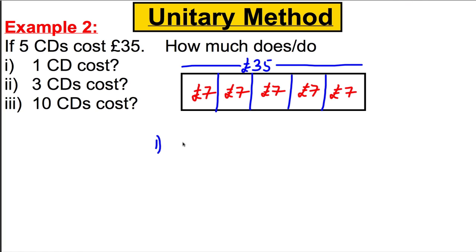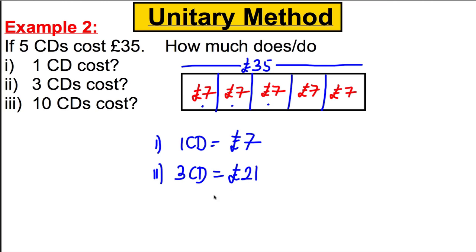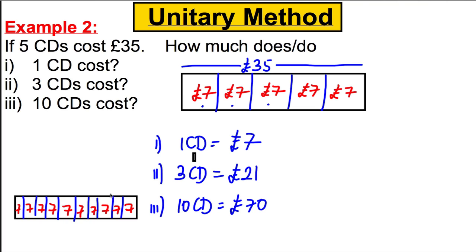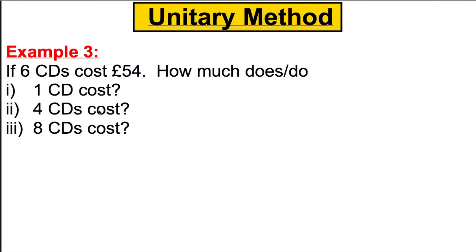It must be seven — seven, seven, fourteen, twenty-one, twenty-eight, and thirty-five. So question one: one CD is one box, so it must be seven pounds. Three CDs are three boxes: seven, fourteen, twenty-one pounds. Ten CDs — draw a box split into ten, seven in each box — seven, fourteen, twenty-one, twenty-eight, thirty-five, forty-two, forty-nine, fifty-six, sixty-three, seventy. So ten CDs must be seventy pounds, or ten times seven which is seventy.